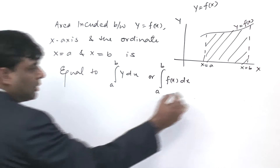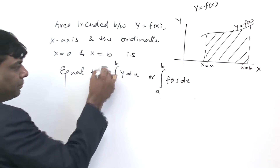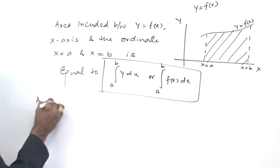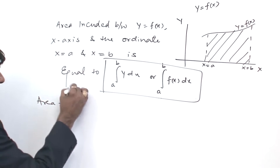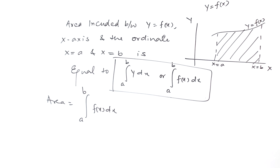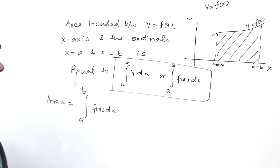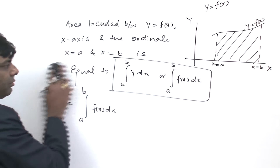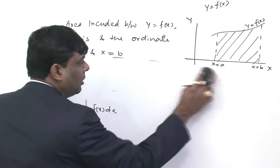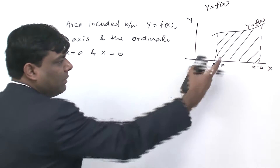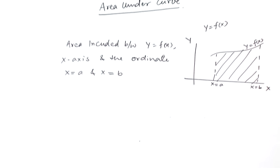This will be equal to area. Area is equal to integral a to b of f(x) dx. Now, we need to understand that the area included between y = f(x), x-axis and the ordinate — in the first case, the value of the integral a to b is where f(x) is greater than 0.